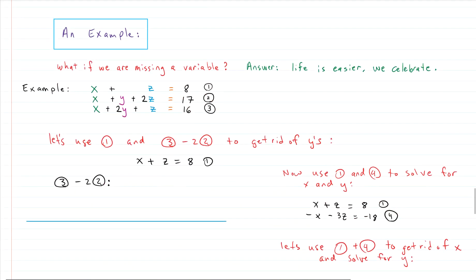Here is our example — what happens if we're missing a variable? Lucky for us, life gets easier. Notice we're missing a y in equation number one. So let's use equation two and equation three to get rid of the y's, and then we'll just be left with x's and z's. We'll multiply equation two by negative two and add it to equation three.